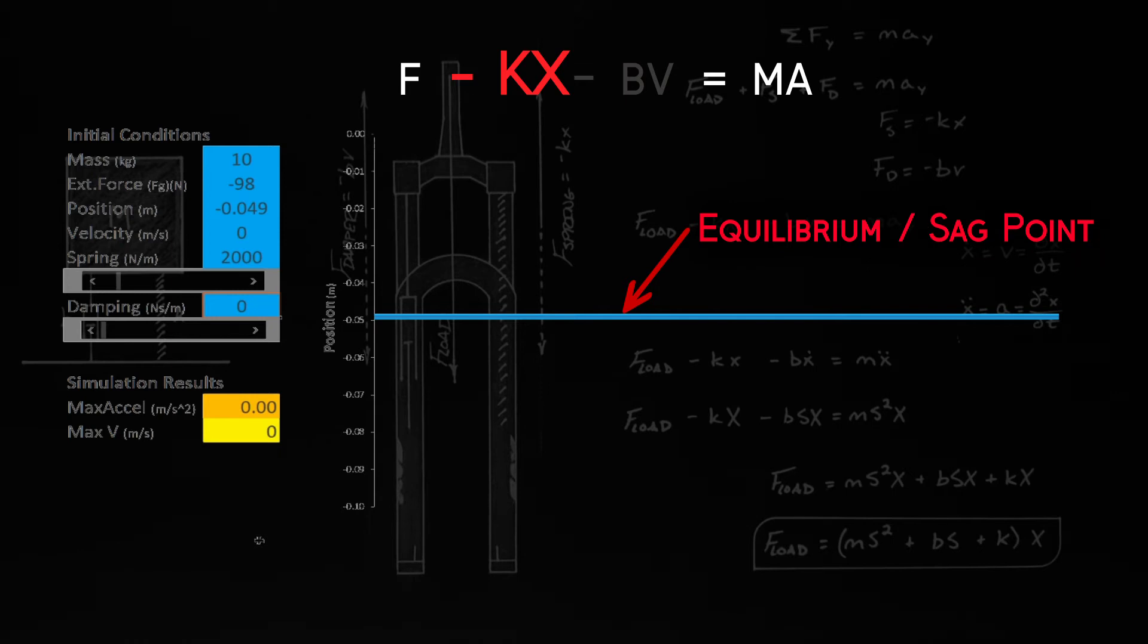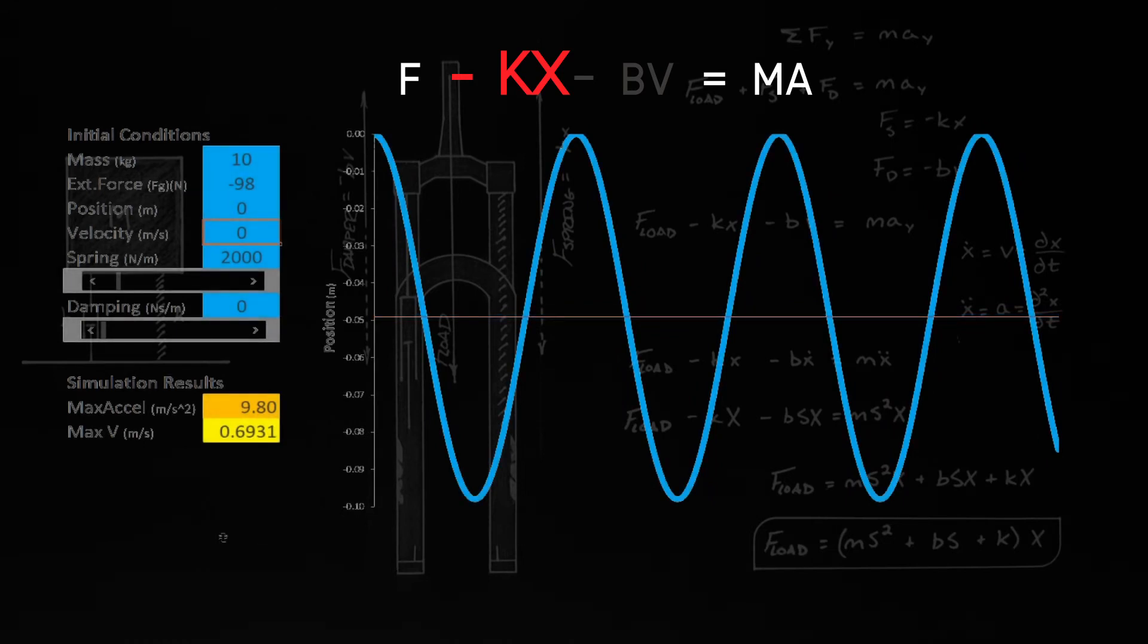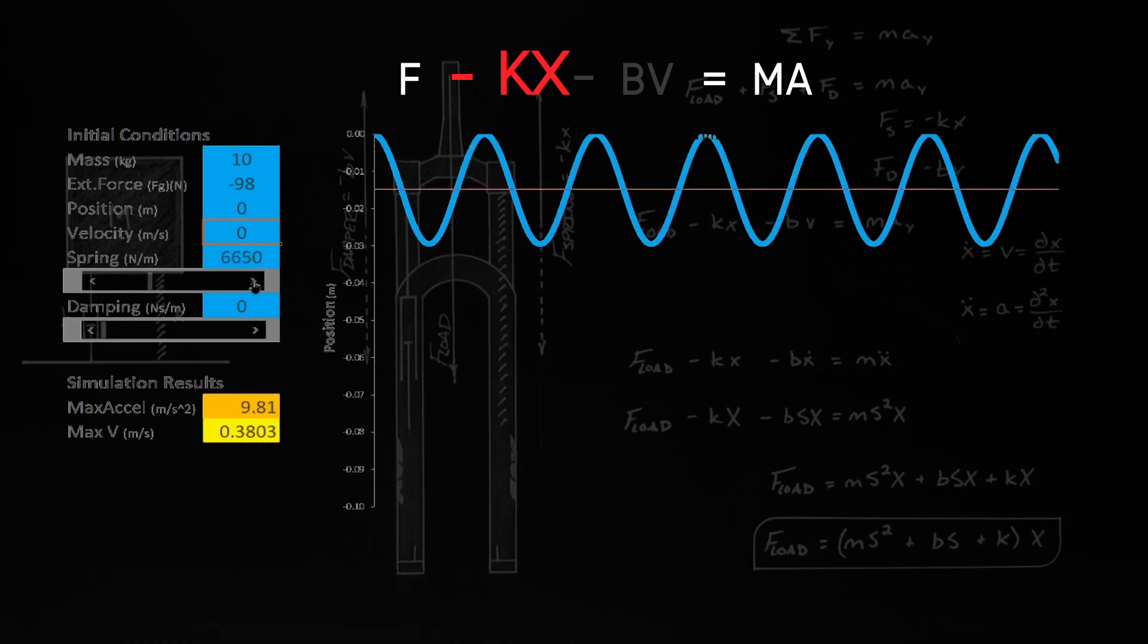So if I slowly lower the block under the spring, the block will settle at equilibrium, or in the case of our mountain bike fork what we would call the sag point. But if the mass has an initial position or initial velocity, then we'll see oscillation. In physics, this undamped oscillation is called simple harmonic motion.